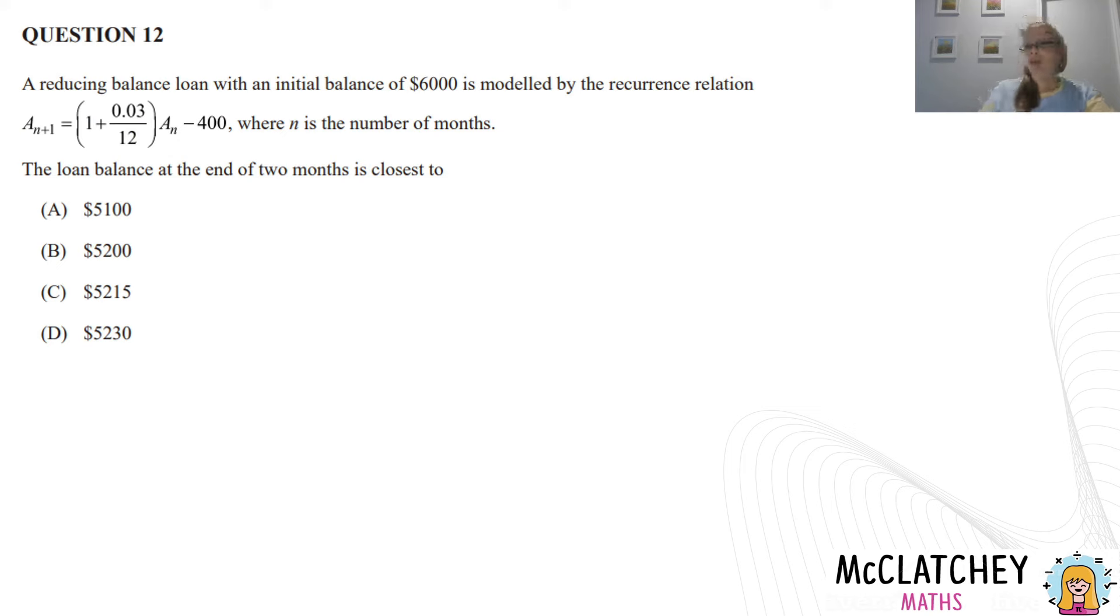And we're now onto our second and final finance question for multiple choice, which I'm sure you're relieved about. A reducing balance loan with an initial balance of $6,000 is modeled by the recurrence relation. And then it tells us what that looks like. So they've actually given us, it's very similar to the previous question. It's a type of annuity that's called a reducing balance loan. So in this case here, we've got this interest rate was 3%. And that's divided by 12. So once again, this is obviously compounding monthly.